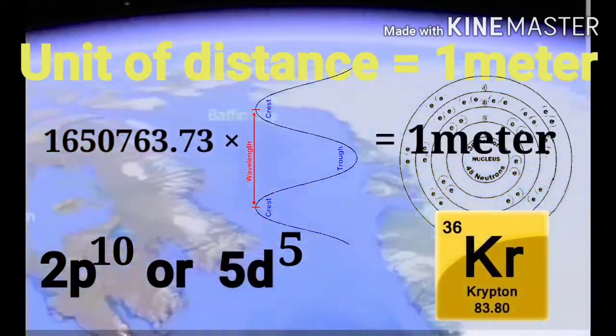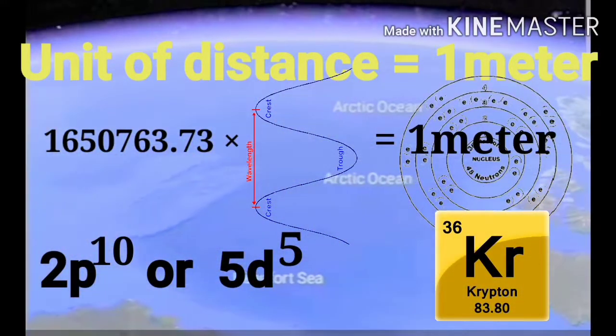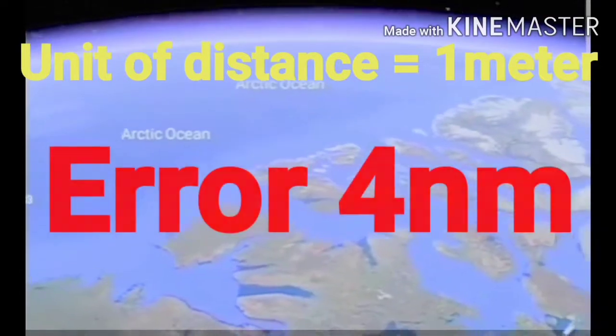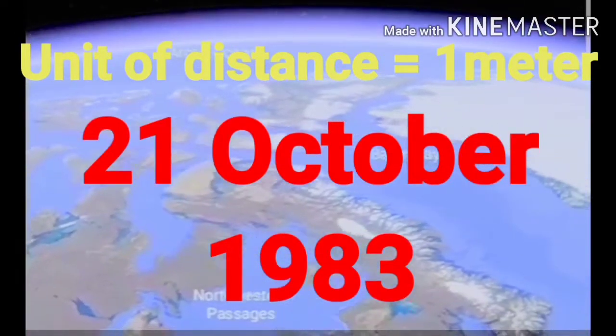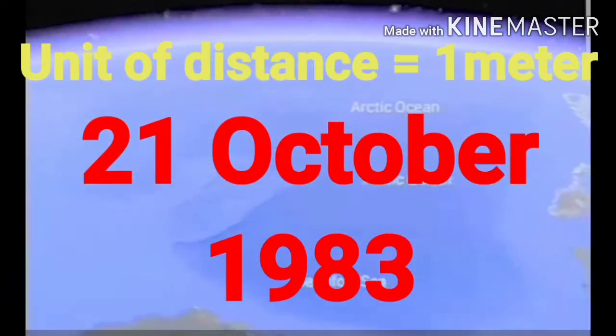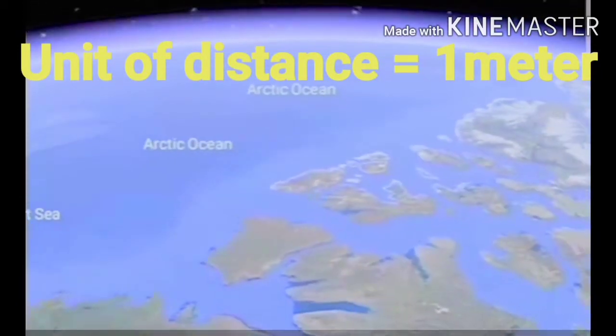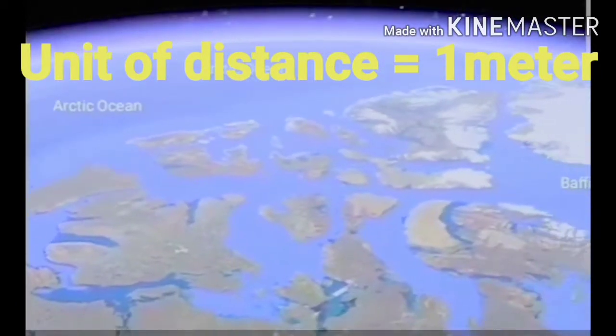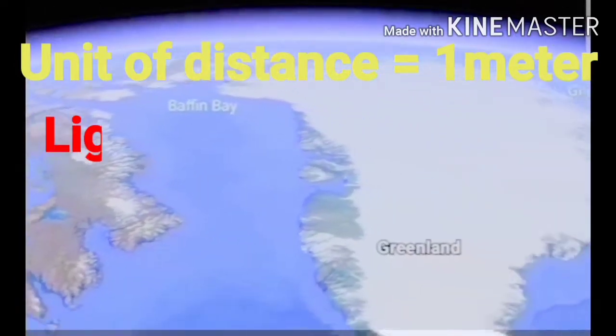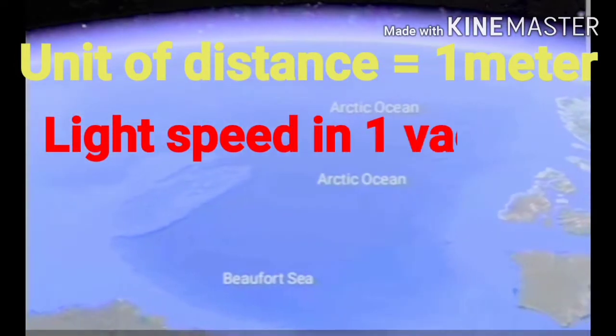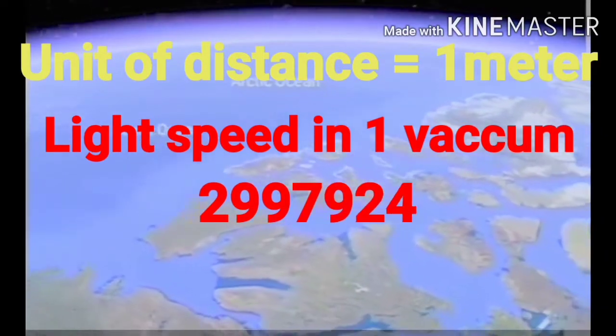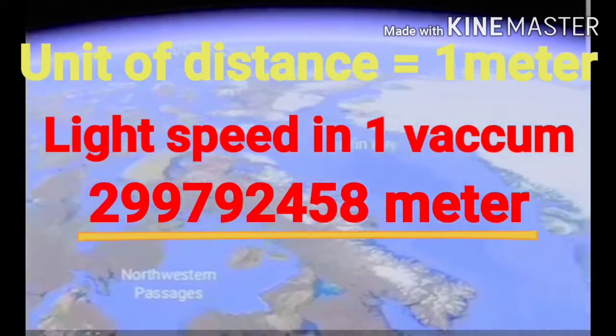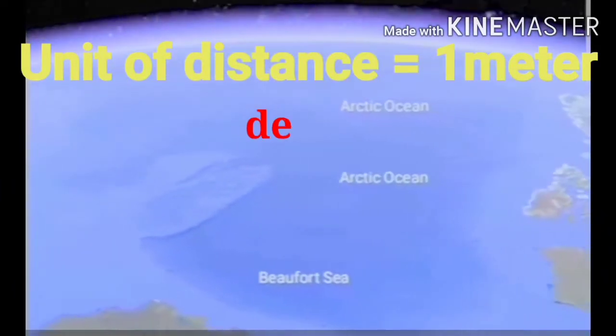But this distance had an error of 4 nanometers, after which it was redefined on the 21st of October 1983, which was based on the speed of light. We all know that light in a vacuum covers a distance of 299,792,458 meters in 1 second.